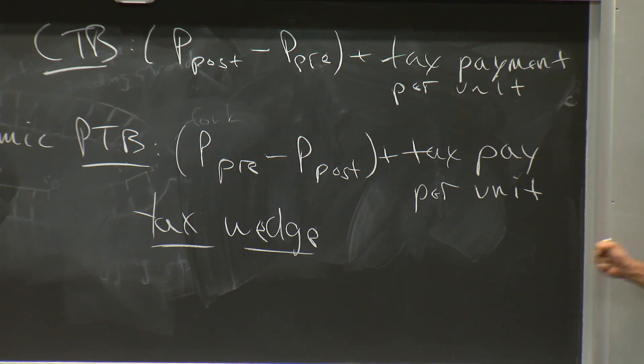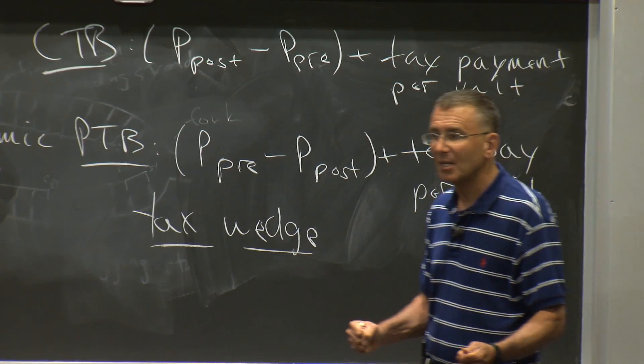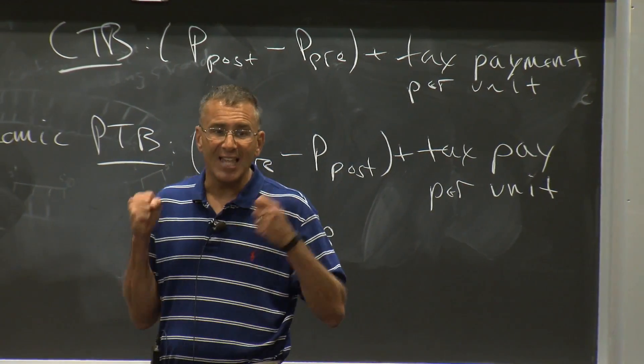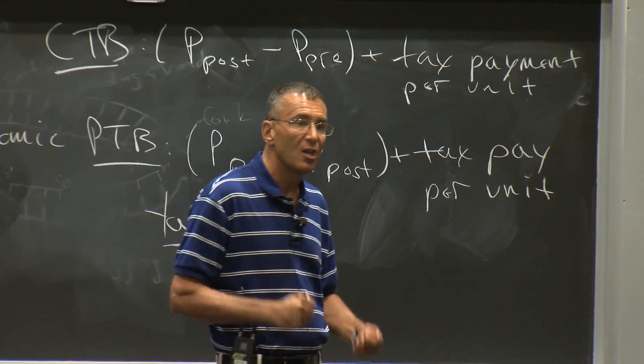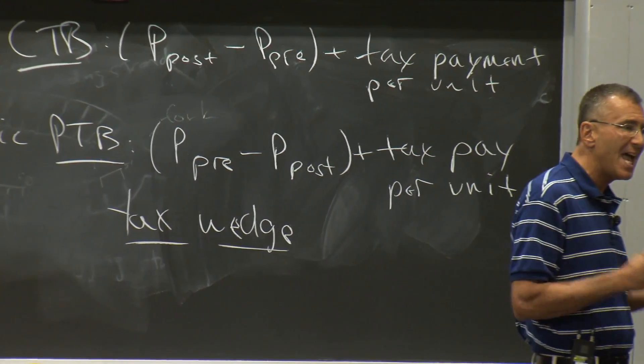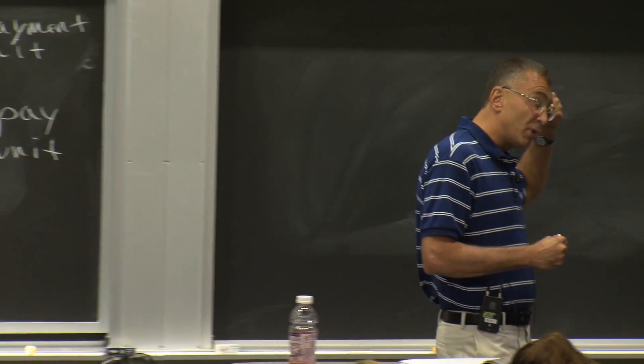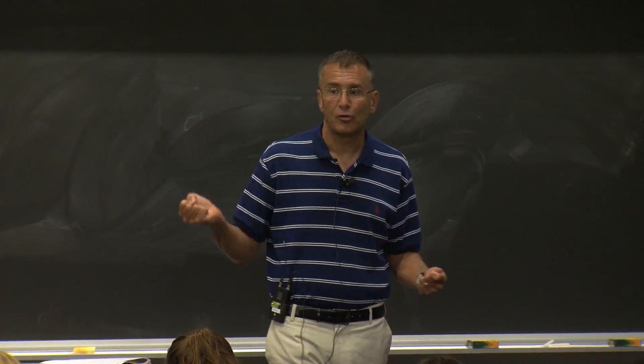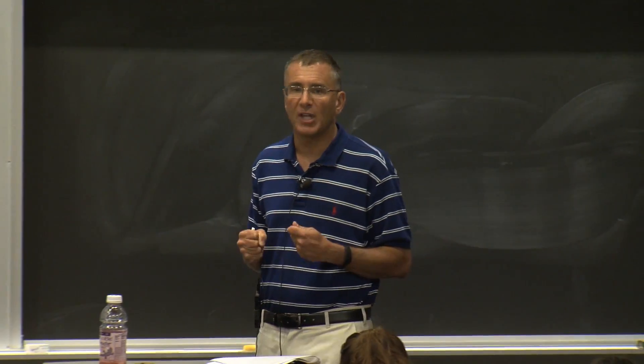Even though we've completely changed who's sending the money to the government, the market reaction has left us in the exact same place. Regardless of who pays the tax, the consumer bears 30 cents, and the producer bears 20 cents. And it doesn't matter who sends the check into the government.